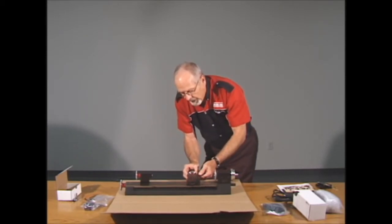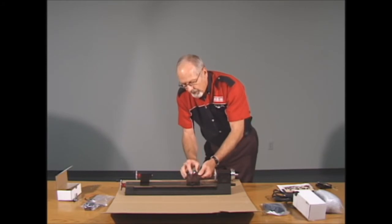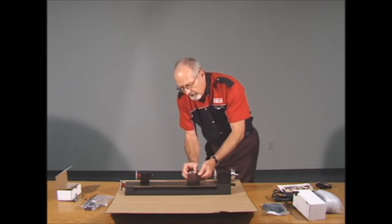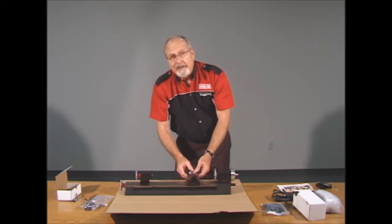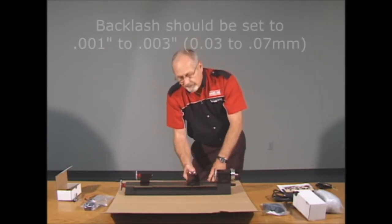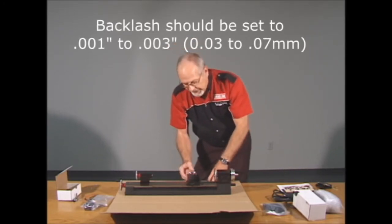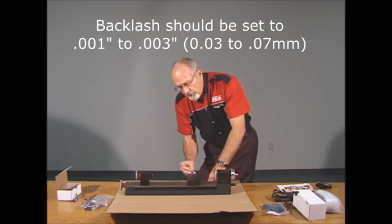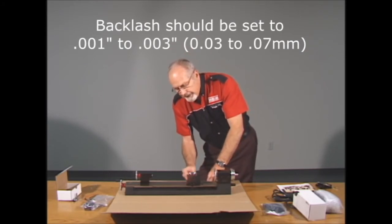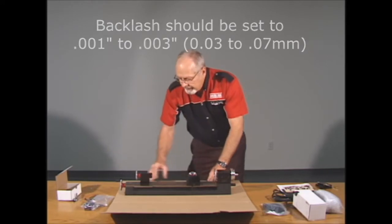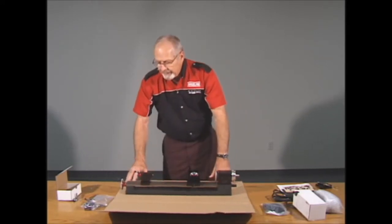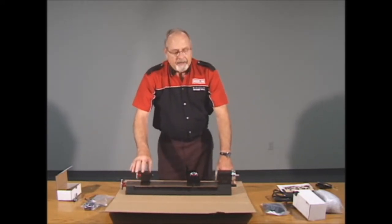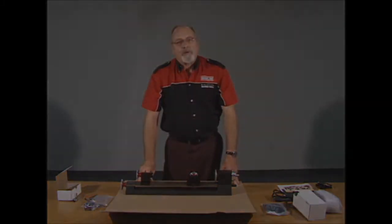Now you can check the backlash either with an indicator or on the hand wheel by turning it one direction, stopping, looking where the number is, and then turning the other direction until you feel it start to pick up. I've only got about a thousandth of backlash in here, so I don't really need to adjust that any tighter. I'm just going to run it up further onto the saddle, and next we'll start putting together the motor and speed control.